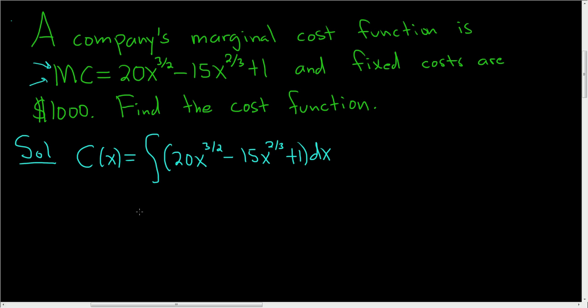And now we'll just carefully integrate each piece using the power rule. So the 20, it hangs out. It's a constant. And then we have to add 1 to 3 halves. So it's really 3 halves plus 2 halves. So we get x to the 5 halves. Then we're supposed to divide by 5 halves. Instead of dividing by 5 halves, let's multiply by the reciprocal 2 fifths.